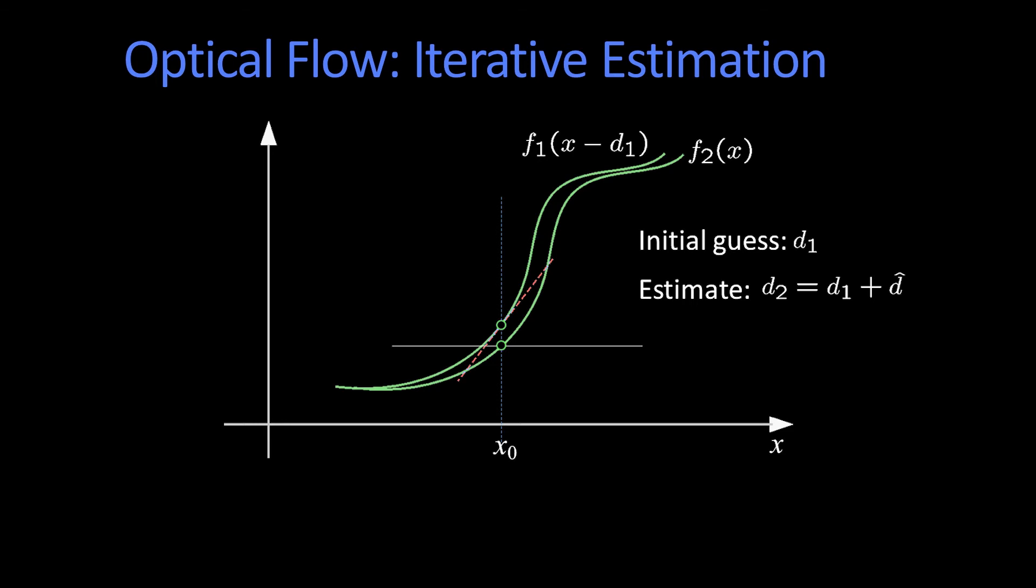So now I've got my d1, which was just d0 plus my new estimate. And guess what? I have to do it again. So now I take a look and say, I have to move this amount. So I add that to my d, and I move it that much. And I do it again.